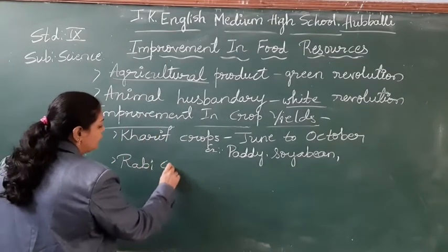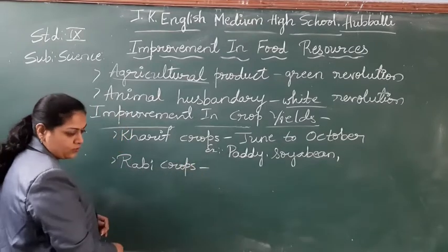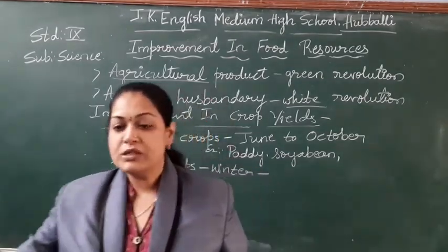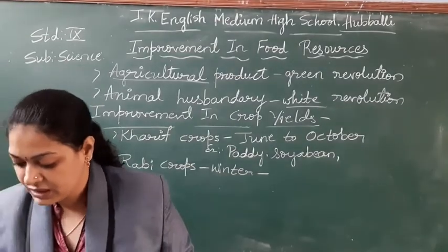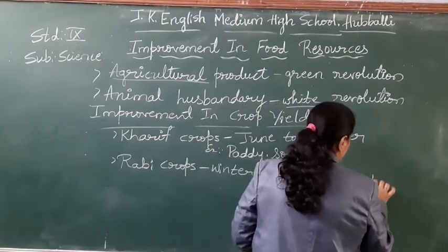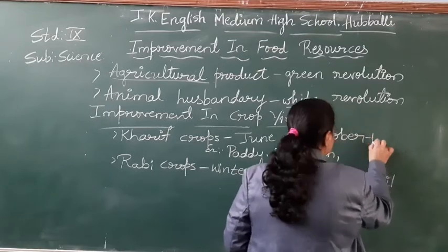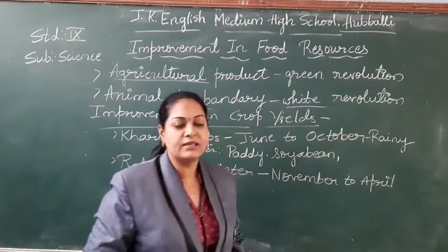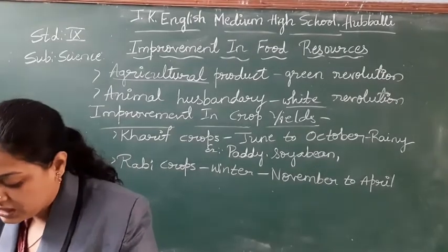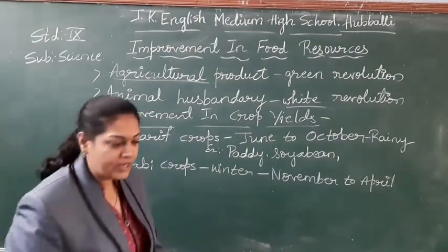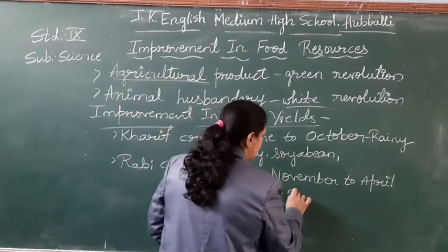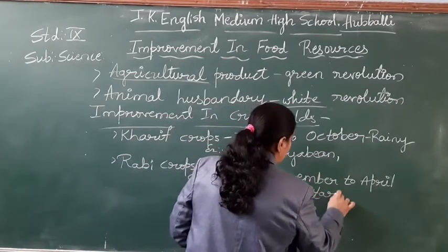Some crops can be grown in the winter season. The winter season begins from November. In the winter season you can grow certain types of crops. Examples of winter crops include wheat, peas, mustard, and linseed.